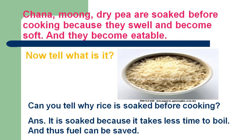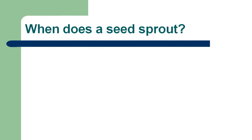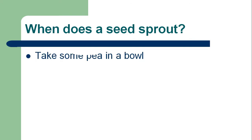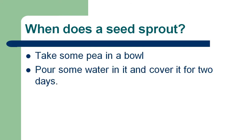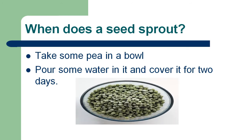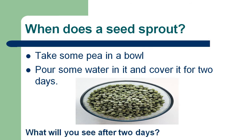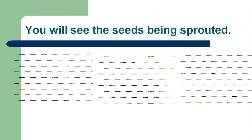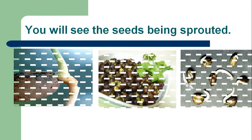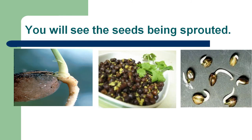When does a seed sprout? Sprout means to grow. We will take some peas in a bowl, pour some water into it, and cover it for two days. After two days you would see that the seeds have started sprouting or growing. Look at the picture — the white tail-like shapes in the seeds are the sprouting parts. From this we know that seeds get sprouted when they get water.